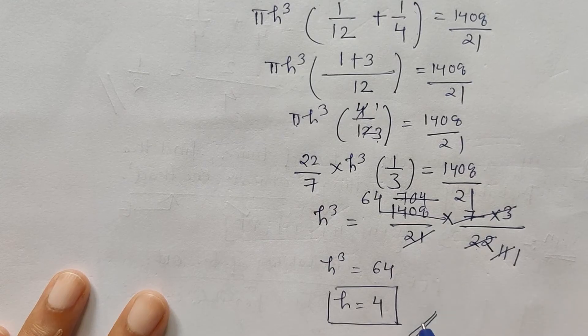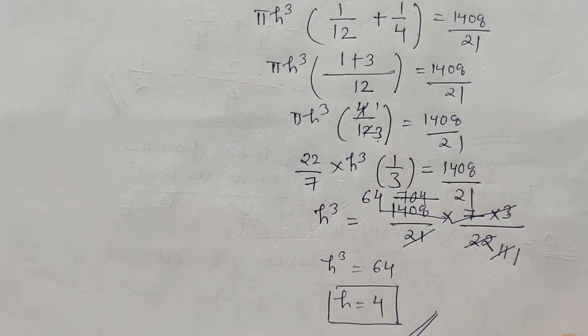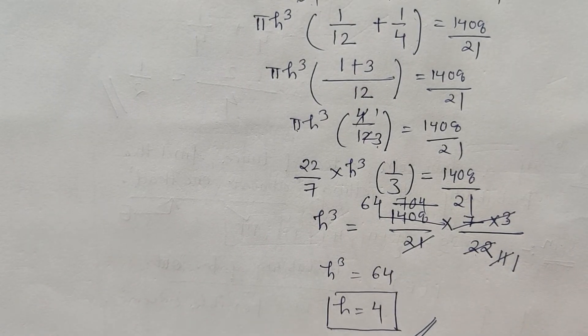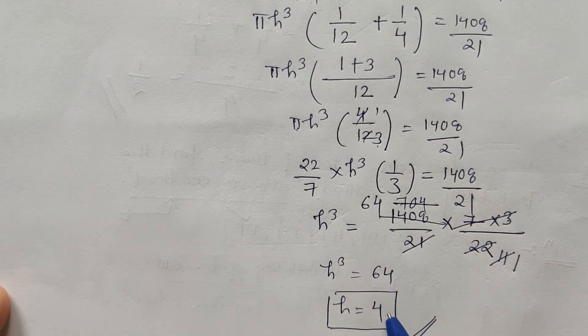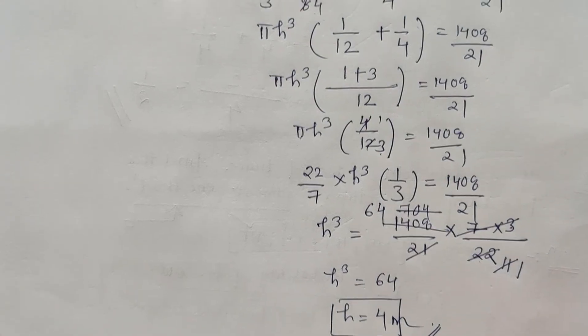So the value of h, and h is the height of the cylinder, is 4, 4 meters. The answer is in meters.